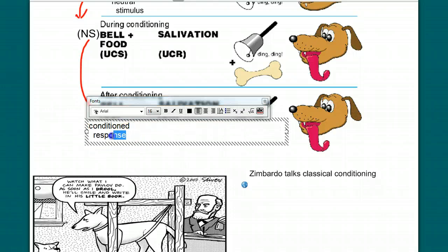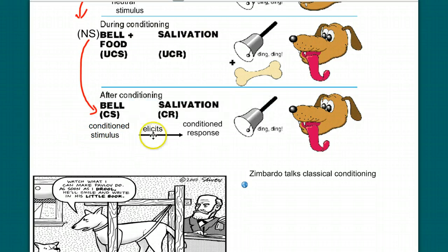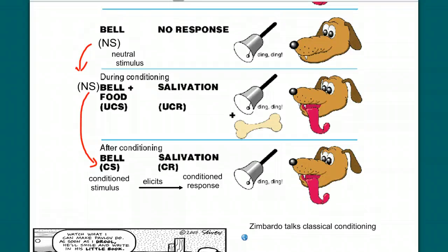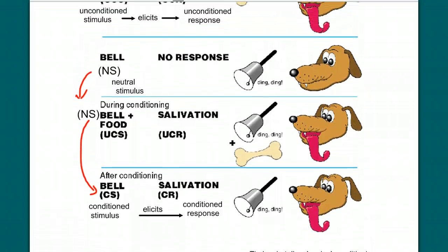And it will elicit the conditioned response. So when a dog salivates to the sound of a bell, that's a learned behavior. A conditioned behavior. This process is called classical conditioning.